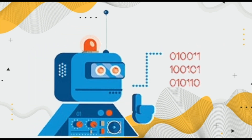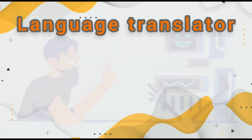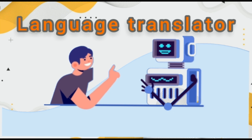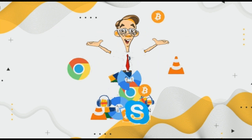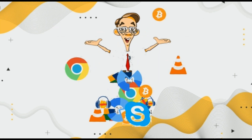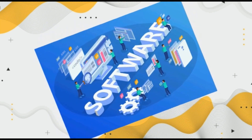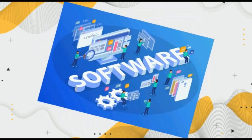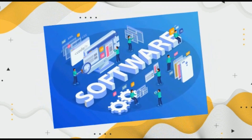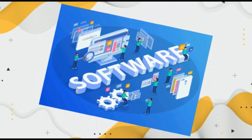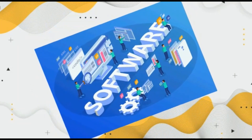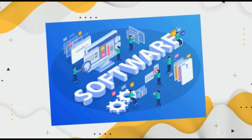There is another kind of system software called a language translator. It translates high level language to machine language. So students, today we have learned about computer software and its kinds — system software, operating system, and language translator. I hope you all have understood these kinds of computer software. Thank you so much, Allah Hafiz.